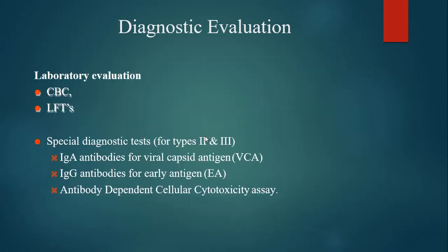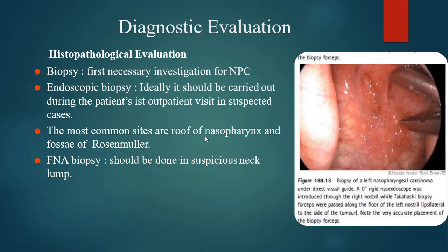Among the lab evaluation, CBC and LFTs are done, and special diagnostic tests for type 2 and type 3 include IgA antibodies for viral capsid antigen and IgG antibodies for early antigen and antibody-dependent cellular cytotoxicity for Epstein-Barr virus. Histopathological evaluation is the first necessary investigation for nasopharyngeal carcinoma and ideally should be carried out at the first visit. The most common biopsy sites are the roof of the nasopharynx and the fossa of Rosenmuller. If the patient presents with a cervical lymph node, FNAC should be done.